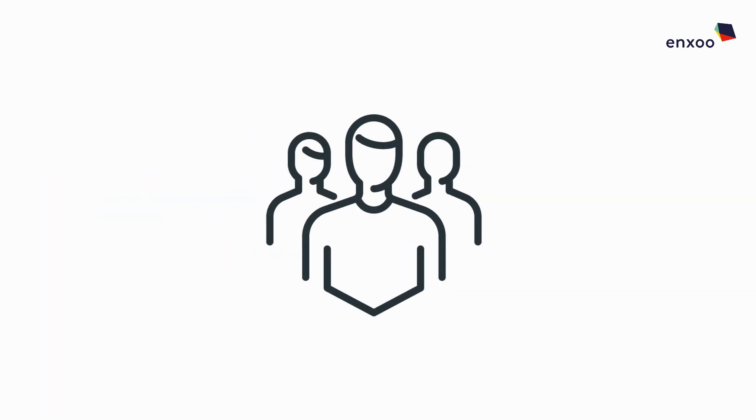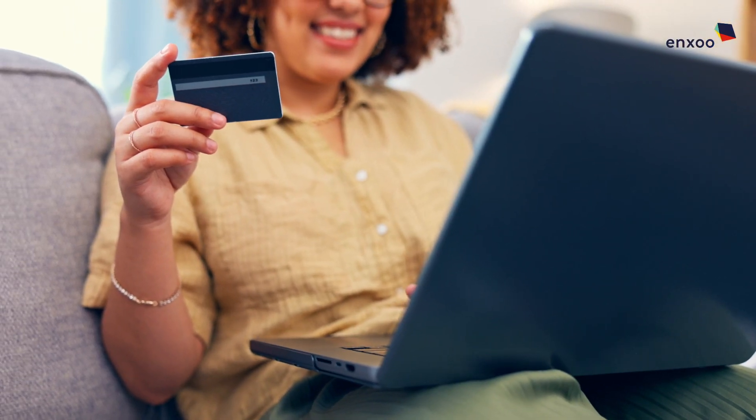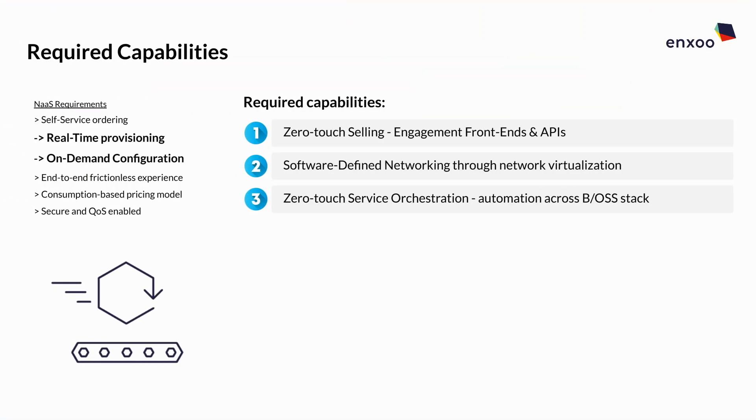Software-defined networking is not the only thing needed, because networks are frequently complex creatures combining multiple technologies from multiple vendors. In order to make it easy for others to interact with them, there needs to be a simple way to access them. One key capability — not critically required but something that drastically simplifies things — is zero-touch service orchestration across the BSS/OSS stack, with APIs that enable provisioning and orchestrating services on top of the software-defined layer.